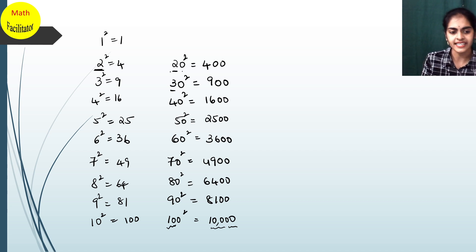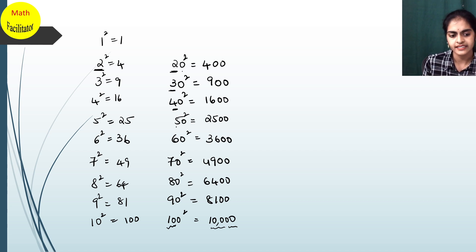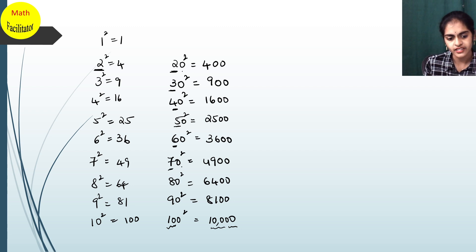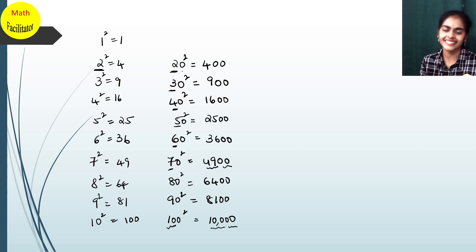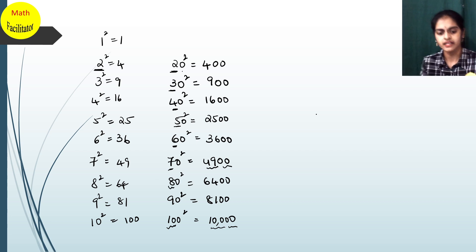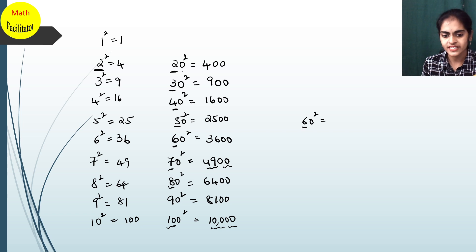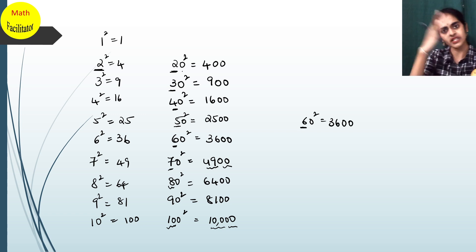So multiples of 10 are very easy. You directly take the digit on the left side, write the square of that digit, and add 2 more zeros to the right of your answer. For example, 60² — 6² = 36 and add 2 zeros — so 3600. Very simple.